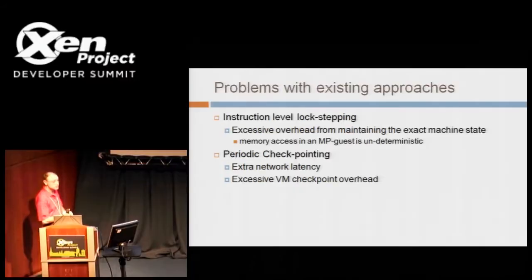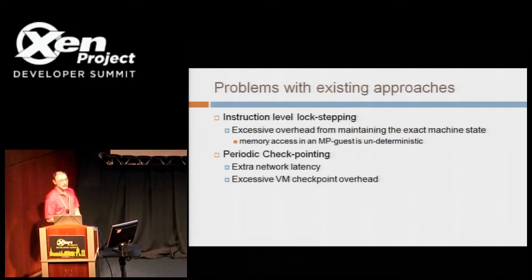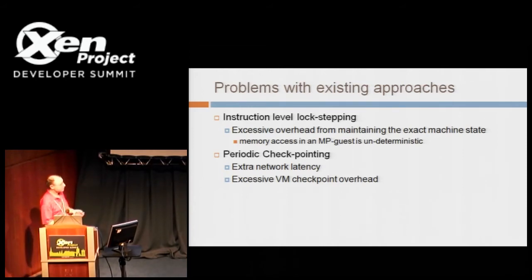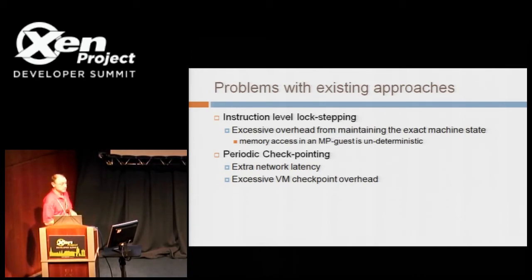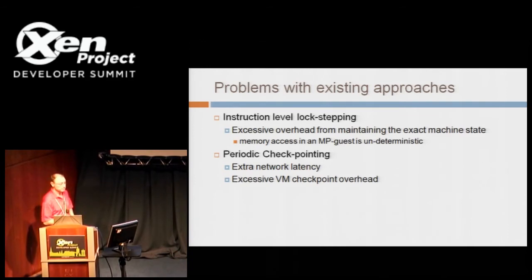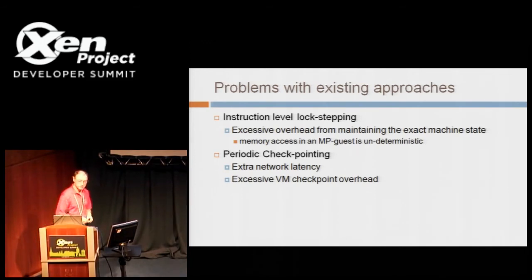So there are some problems with existing approaches. One is just this kind of instruction-level lock-stepping. In this approach, it really doesn't compete well performance-wise because there's just so much overhead, especially when done in software. In the periodic checkpointing approach — something like Remus — you've got the extra latency for the packets that you're buffering up, and you're doing a checkpoint at the end of every period. That has quite a bit of overhead associated with it.